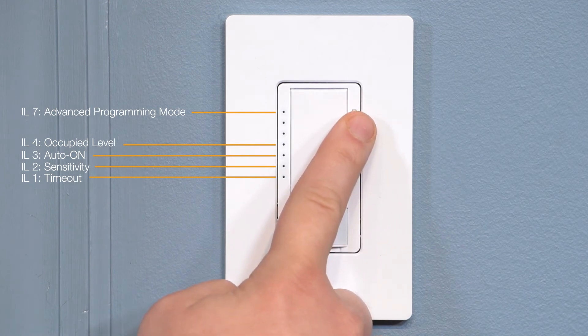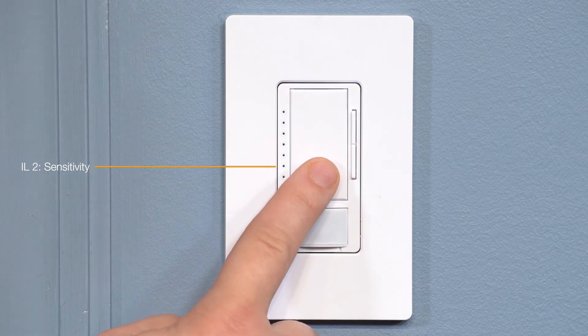Use the raise button to move to the second from the bottom indicator light. Hit the tap switch to select sensitivity.